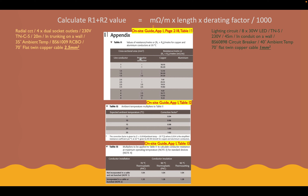These three tables are all from Appendix I in the on-site guide. You can see the references there highlighted in yellow. Note them down and get to know where they are. Table I1 is values of resistance per metre — the R1+R2 value per metre for copper and aluminium conductors at 20 degrees. That's the value it was tested at, so we need to bear that in mind. That's why we add a de-rating factor.